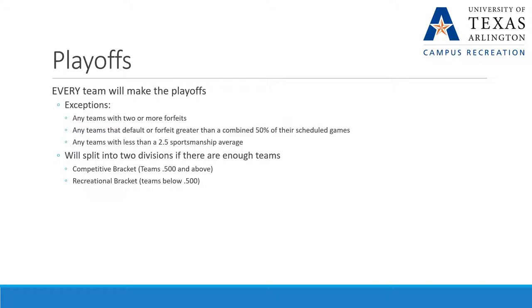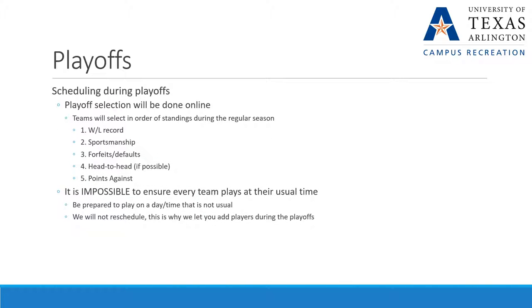If there are enough teams, there will be two divisions: a competitive bracket with teams that have a win-loss record above .500, and a recreational bracket for teams below .500. During playoffs, the scheduling is done online, and the priority of selection has to do with standings and seed during the regular season. That's decided primarily by win-loss record, with tiebreakers being sportsmanship, number of forfeits or defaults, whether teams have played head-to-head, and finally points against.